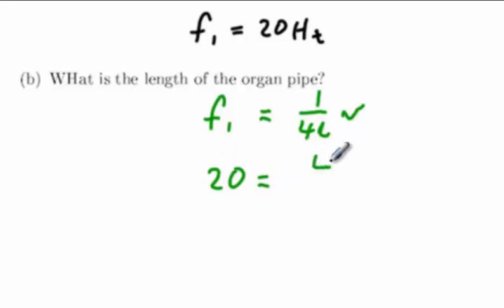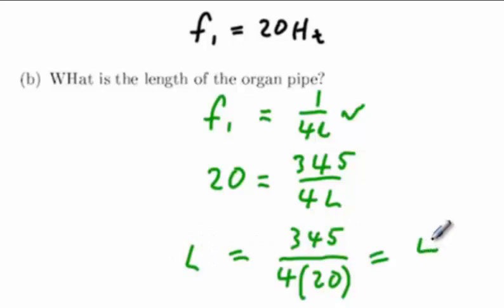We can plug all of this information into the equation at hand and find that the only unknown in this equation is the length L, yielding L to be equal to 4.31 meters, exactly as one would expect for the largest organ pipe which plays the lowest notes.